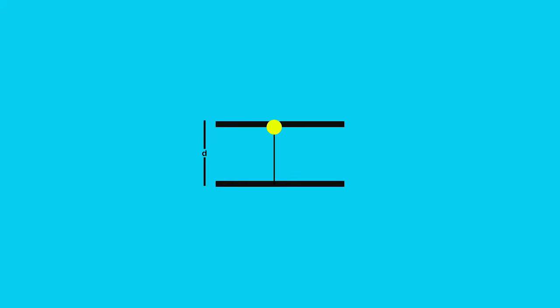So this clock is going to consist of two mirrors, a distance D apart, with a photon reflecting off those two mirrors, going up, down, up, down. And every single time it goes from one mirror to the other mirror, that is one tick of the clock.